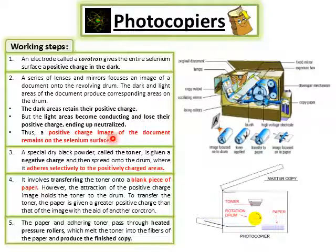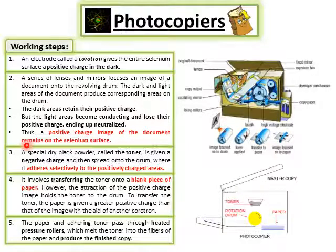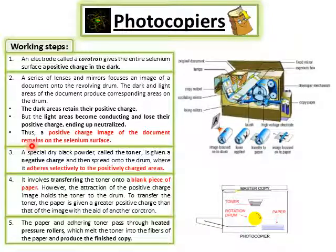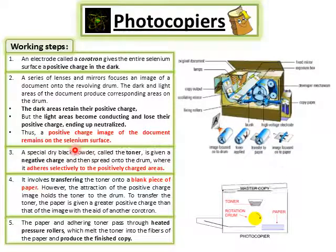Simply put, in the dark and light areas, a positive charge image is formed. This image is the result of the words or content written on our original paper. The positive charge image is now visible on the selenium surface corresponding to the document.